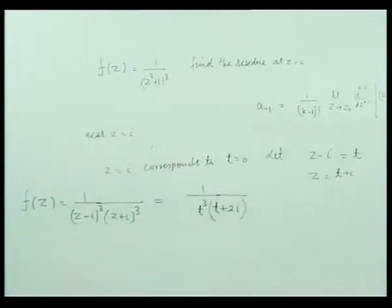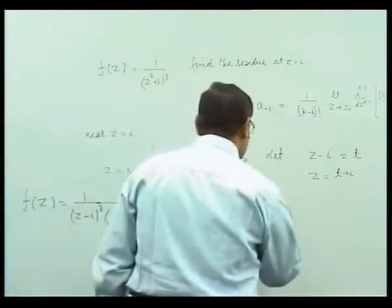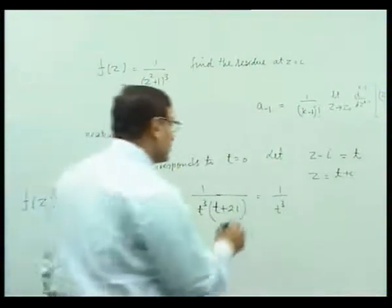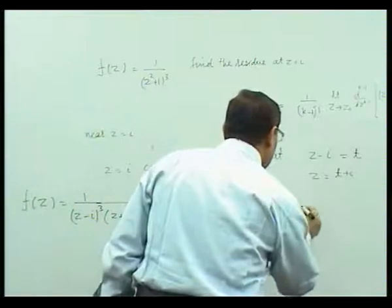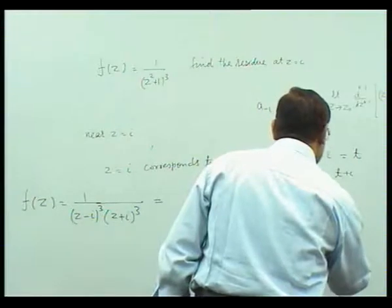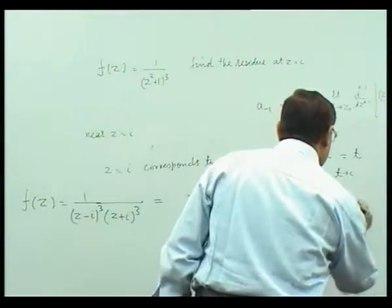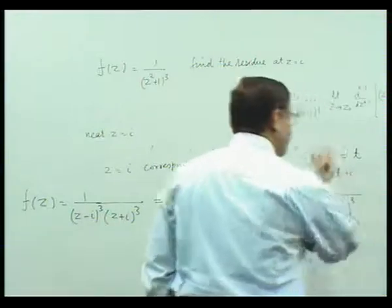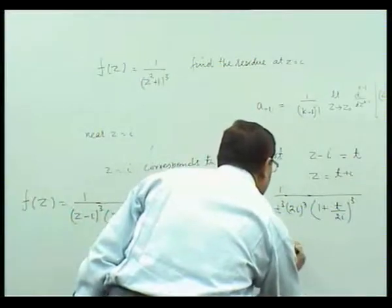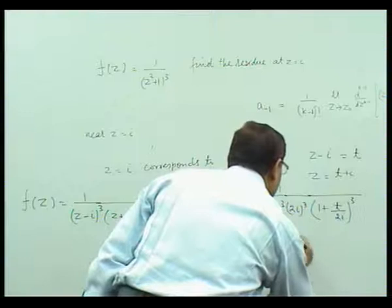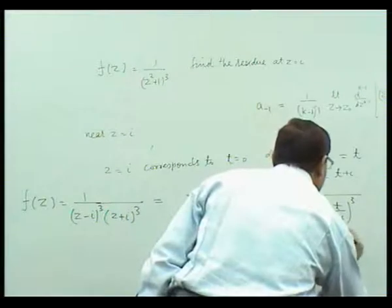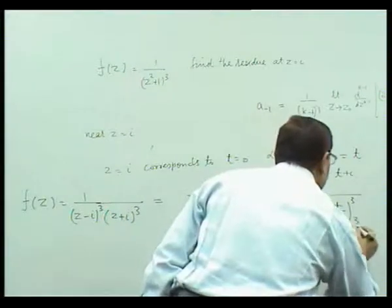To expand by the binomial theorem, we write 1/t³ and take 2i common from (t + 2i)³, giving (2i)³ · (1 + t/(2i))³. Taking it upward, this becomes 1/[t³ · (2i)³] · (1 + t/(2i))^(−3).